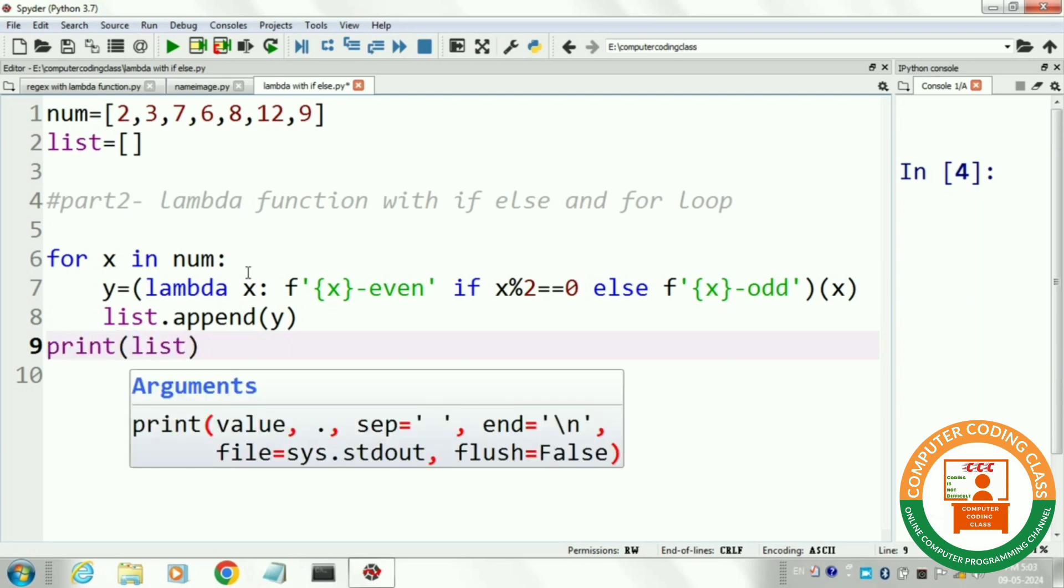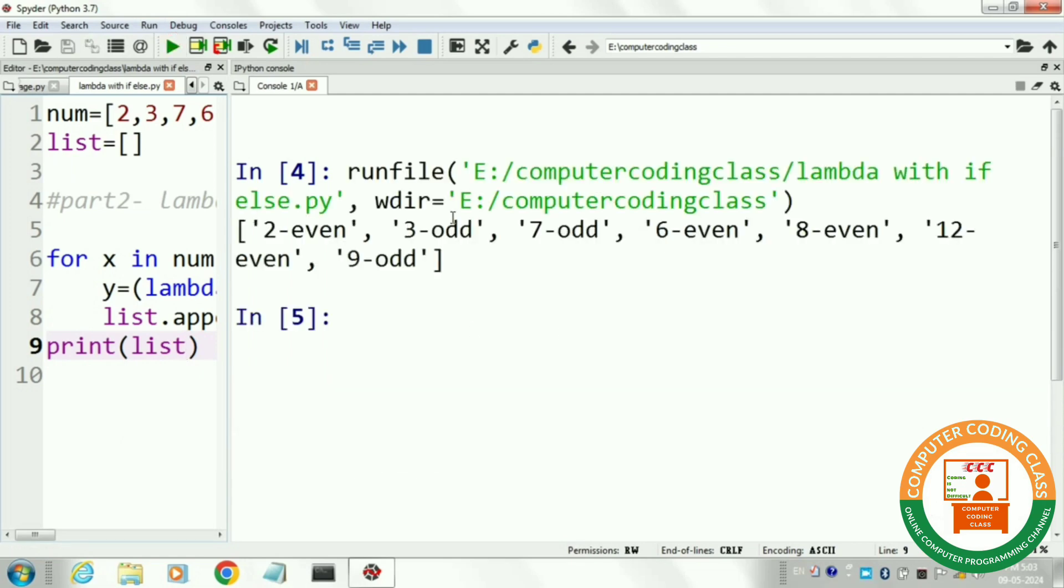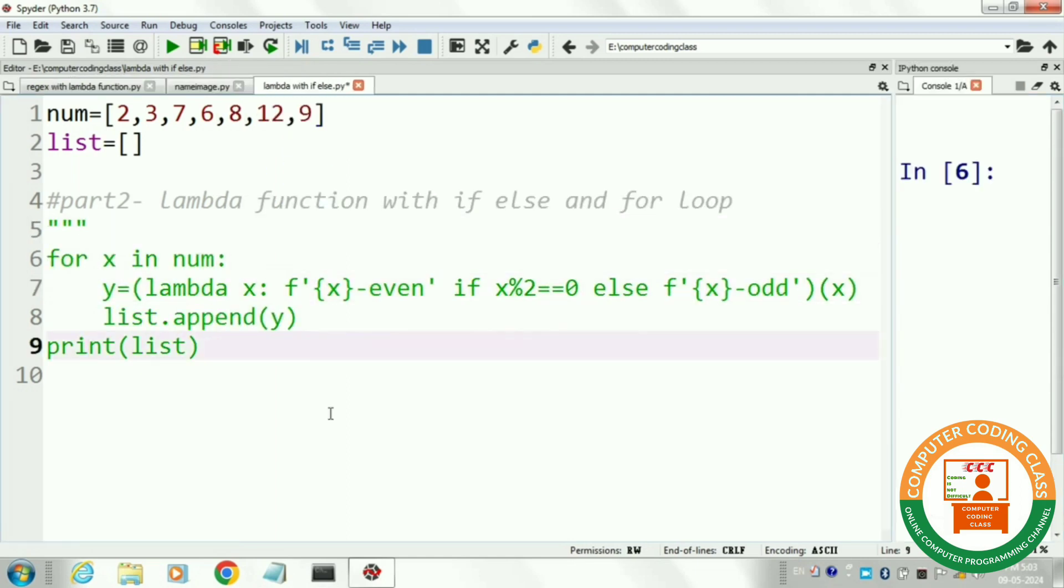Next, this lambda function decreases the length of our program. Previously, we used five lines for calculation. Now, in lambda function, we use only three lines for calculating even and odd numbers. These are the even and odd numbers by using lambda function.